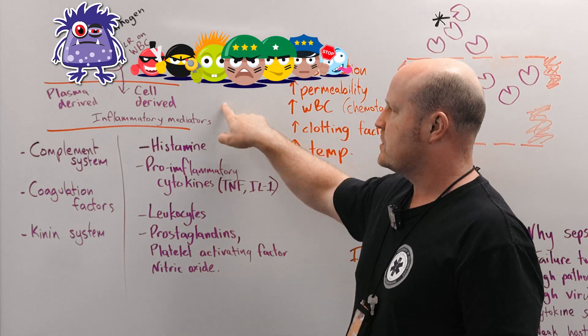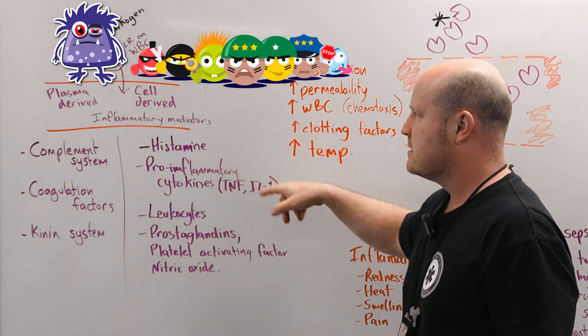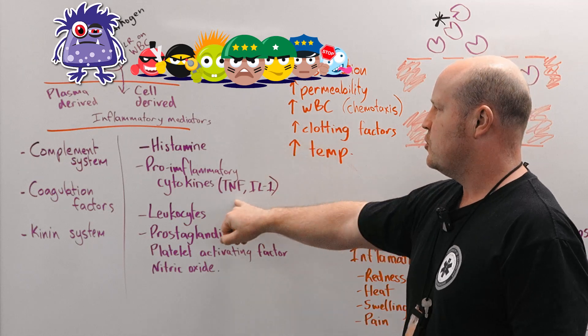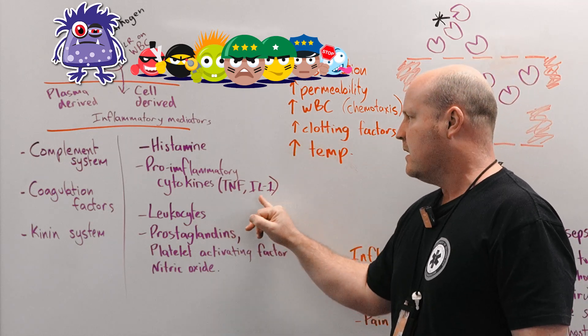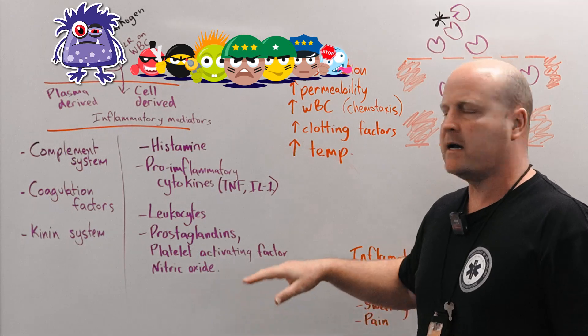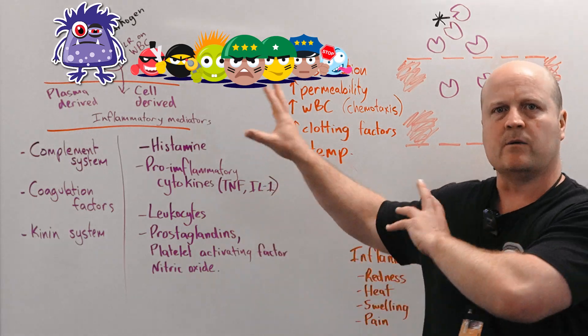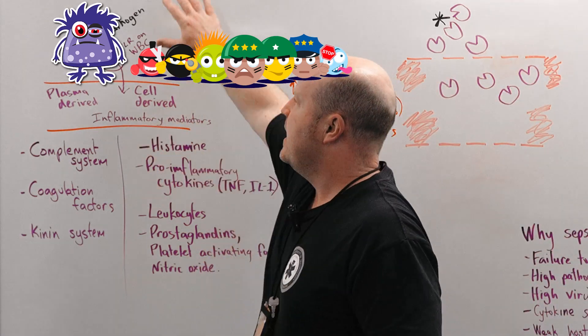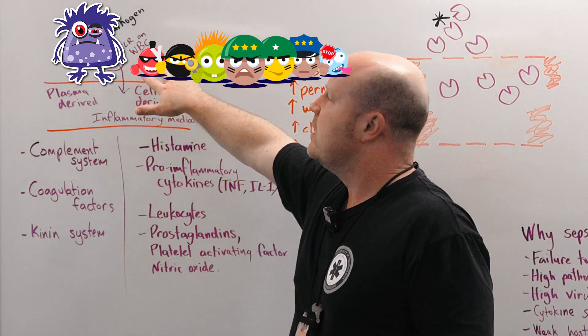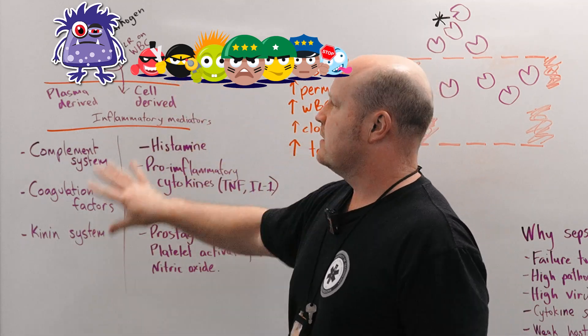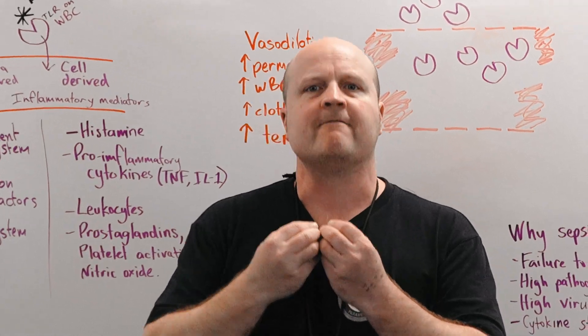And then our cell-derived inflammatory mediators are things like histamine, pro-inflammatory cytokines, tumor necrosis factor, interleukin-1, leukocytes, prostaglandins, platelet activating factor, nitric oxide. So basically what this is saying is our pathogen attaches to our toll-like receptors on a white blood cell and then through all these mechanisms we have an inflammatory response.